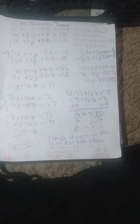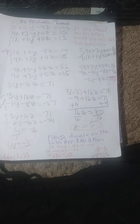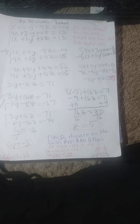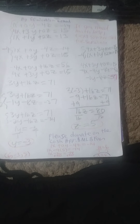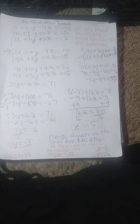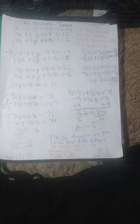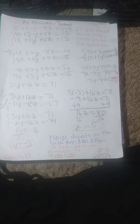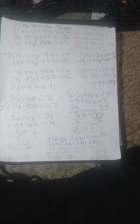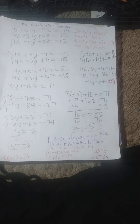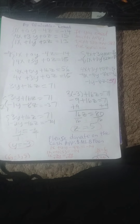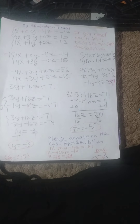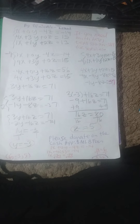Since there are three rows, we have to use the middle row twice. So we break this down to: 1x plus 0y minus 4z is equal to negative 14, 4x plus 3y plus 0z is equal to 15, and 4x plus 3y plus 0z is equal to 15, and 1x plus 1y plus 2z is equal to 13.